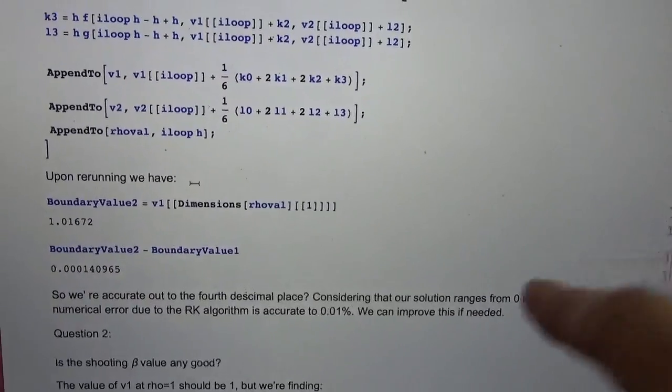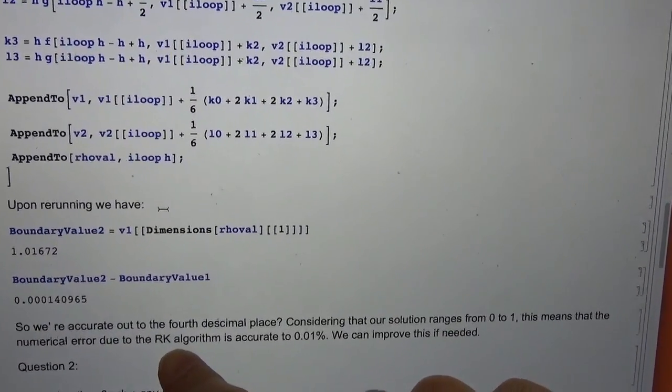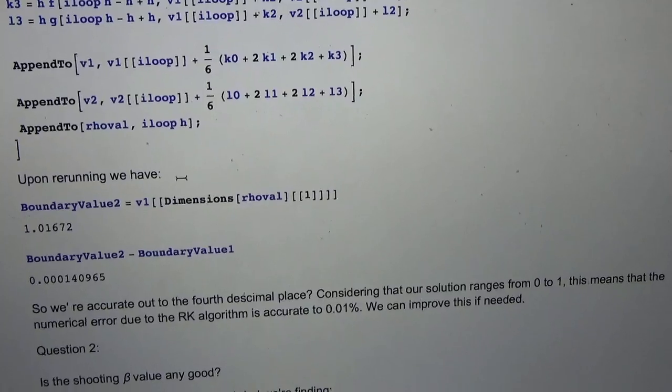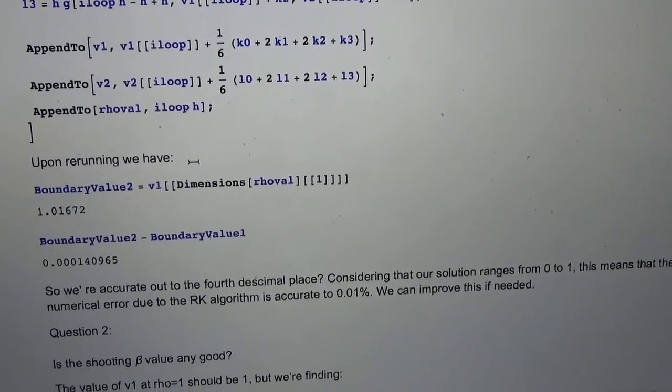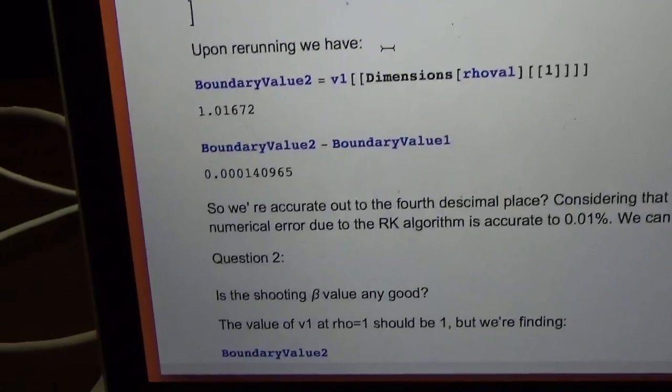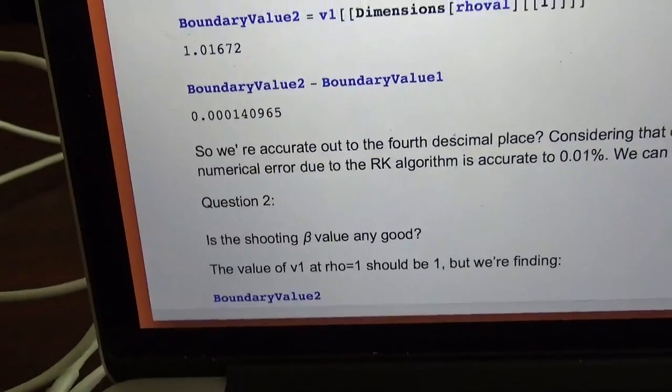The error, then, from our Runge-Kutta algorithm is accurate to about 0.01%. Second question is, what about the shooting value that we picked? Is it any good? Well, I knew that I was kind of in the right neighborhood, but we can simply look at that boundary value, and it should be 1, and it's not quite.